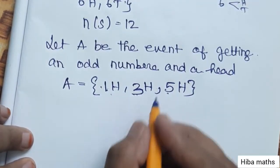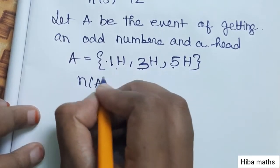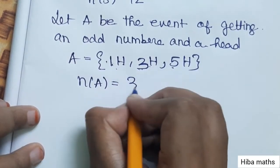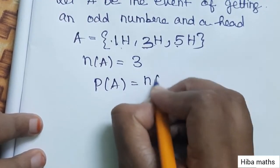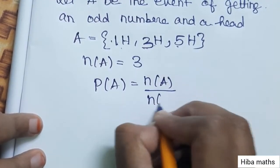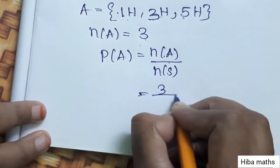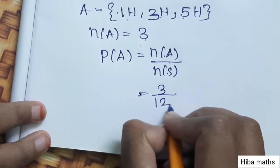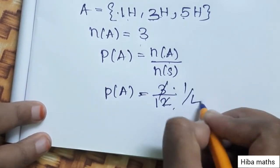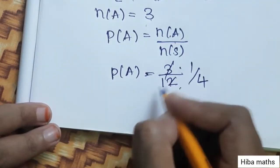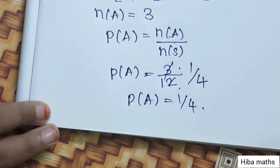Event A consists of odd numbers 1, 3, 5 paired with head: {1 head, 3 head, 5 head}. So N(A) = 3. The probability of A is N(A) / N(S) = 3/12. Cancelling, P(A) = 1/4.